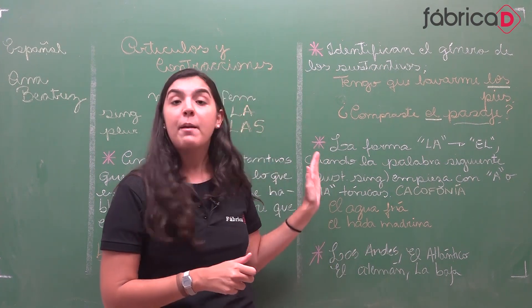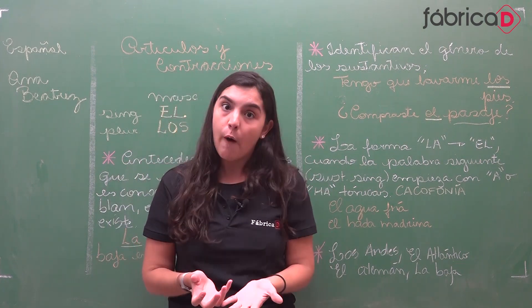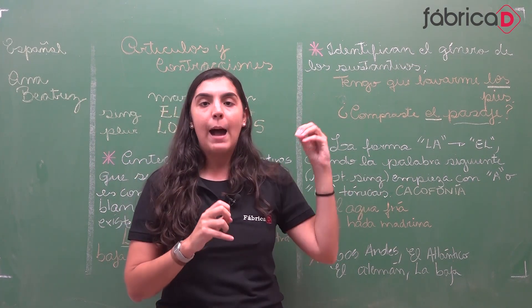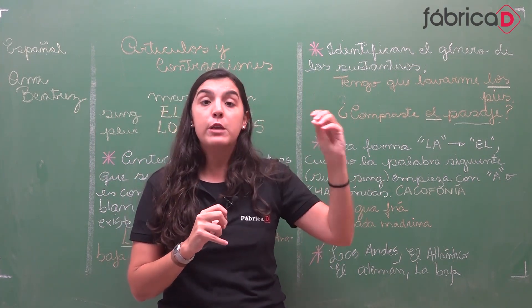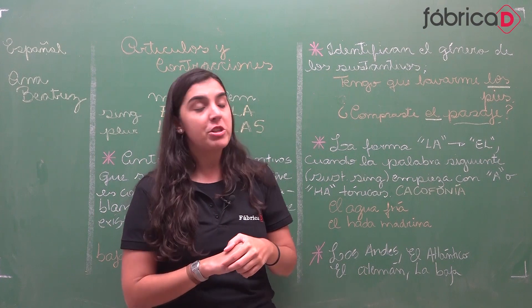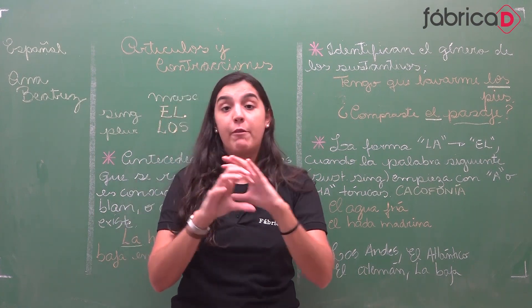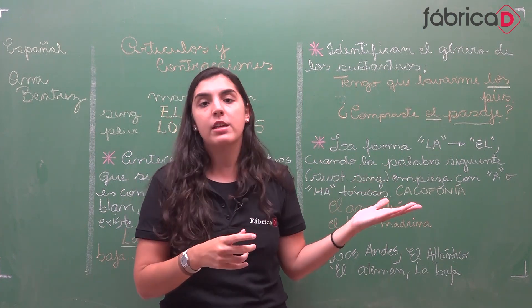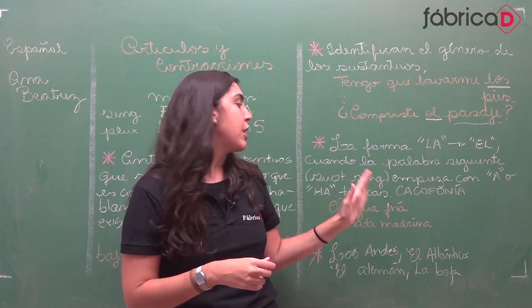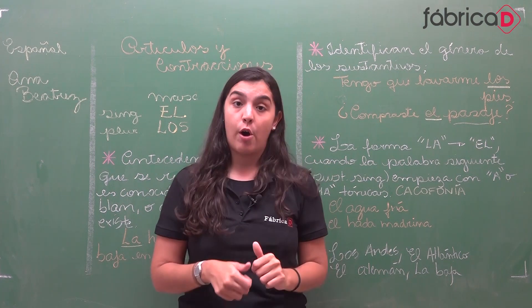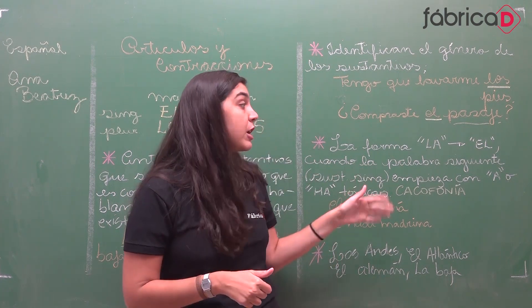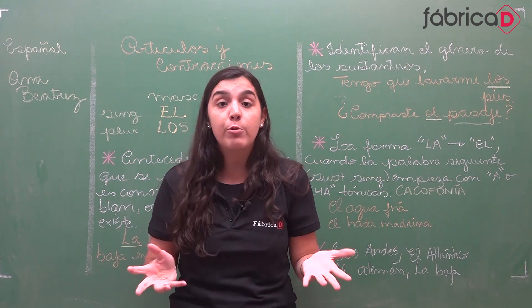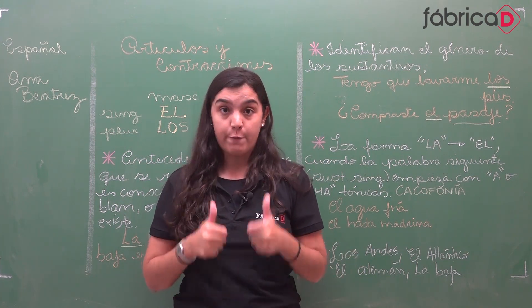Atenção: isso cai bastante em prova. Cai da seguinte maneira: 'aponte ou marque a palavra que sofra o mesmo fenômeno'. Pode ser que tenha uma frase de exemplo e você tenha que buscar outra que tenha a cacofonia, que seja o 'a' ou 'ha' tônicos. É uma questão muito comum porque cobra o básico do uso de artigos ali na própria exceção.